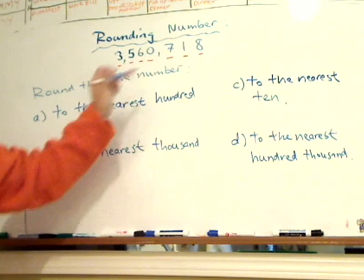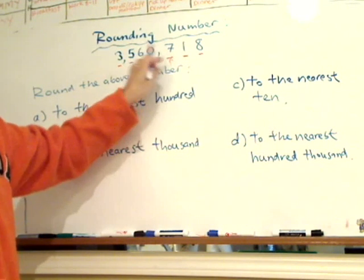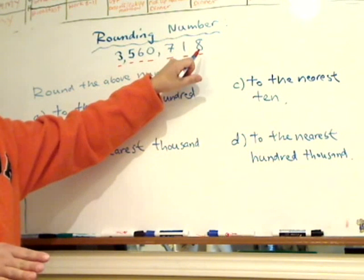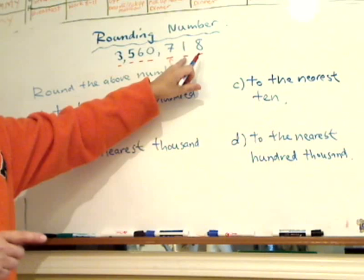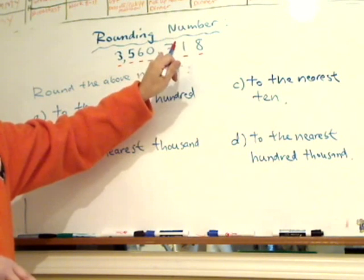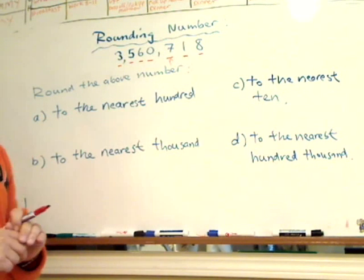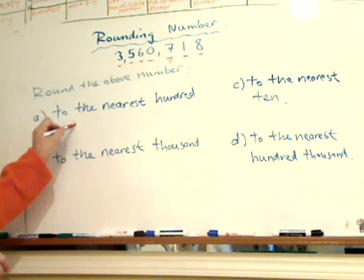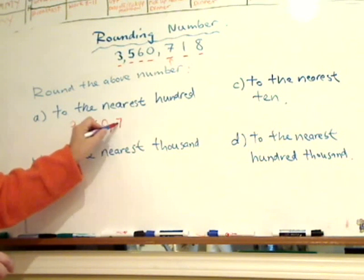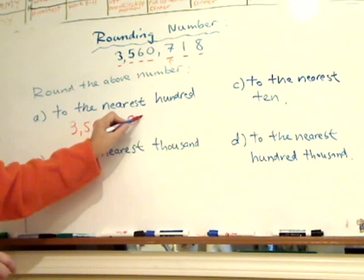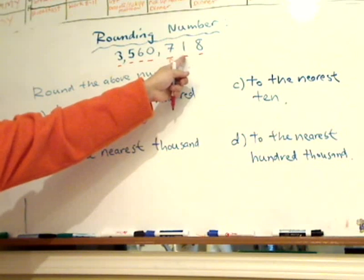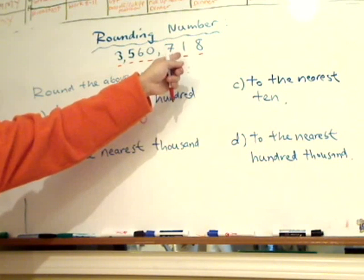This question is asking to the nearest hundred, so we're talking about this digit here — this is the hundreds place. You always look at the number before that, which is a one here. Since it's a one, it's less than five, so we round down. Seven hundred stays as seven hundred. The answer would be three million, five hundred and sixty thousand, and seven hundred.